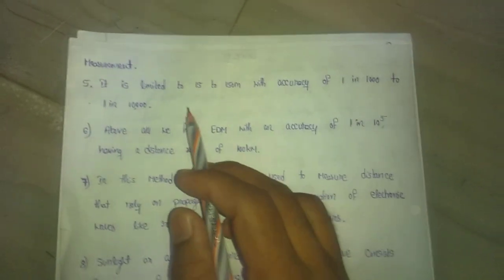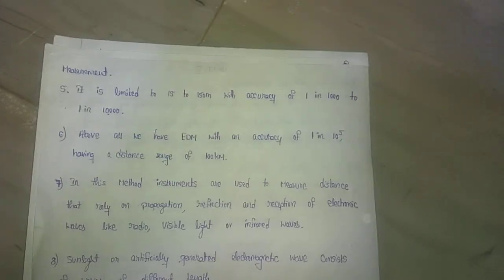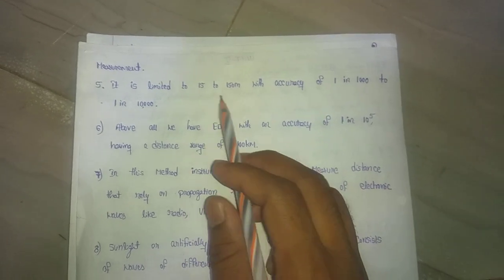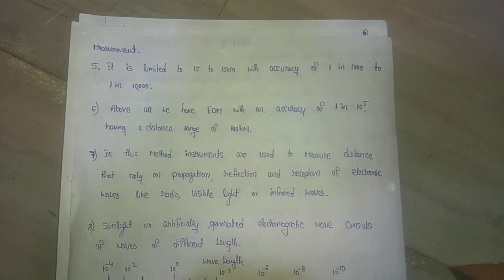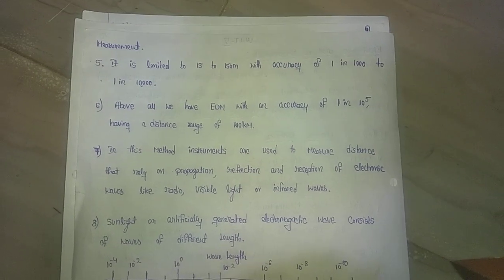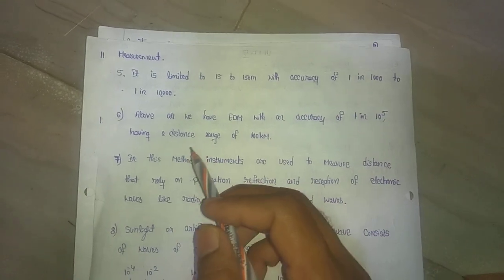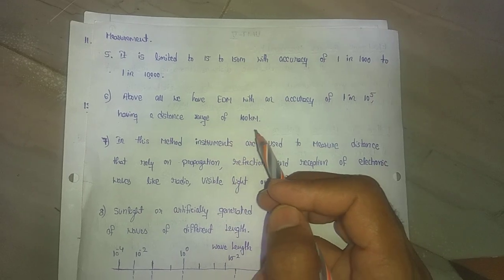Using optical distance measurement, it is limited to 15 to 150 meters with accuracy of one in one thousand to one in ten thousand. So by using optical distance measurement, we can only measure a limited distance. The electromagnetic distance measurement method has a limited area of 1 in 10 to the power of 5, with a distance range up to 100 kilometers.